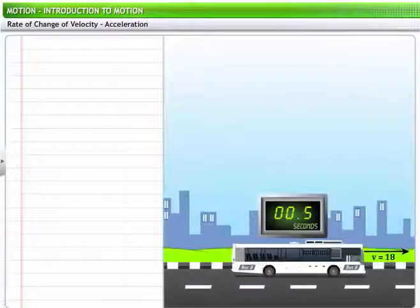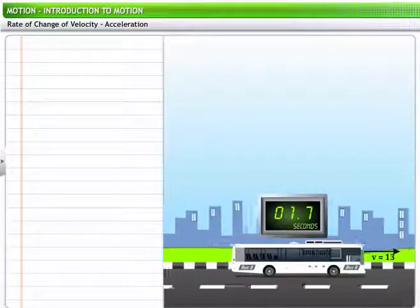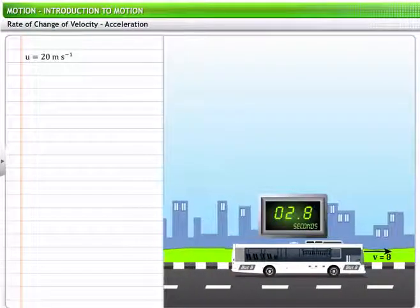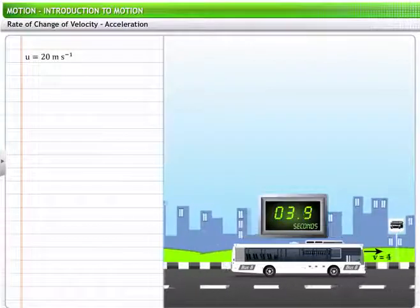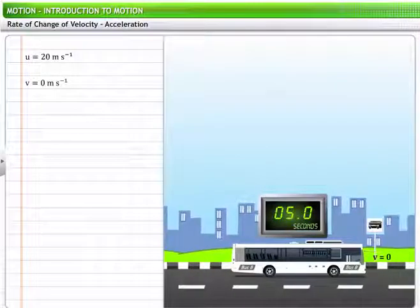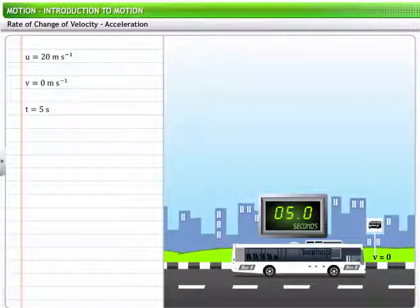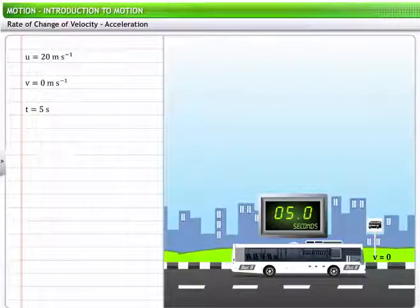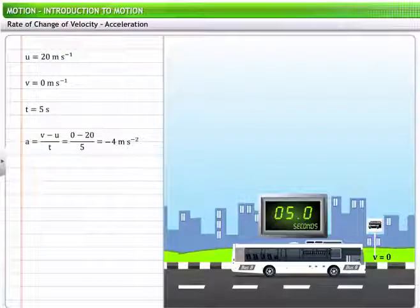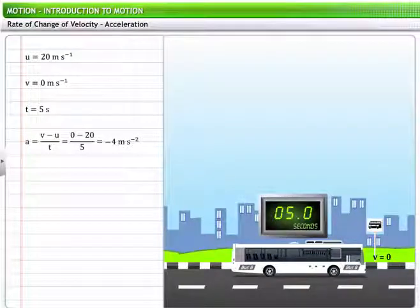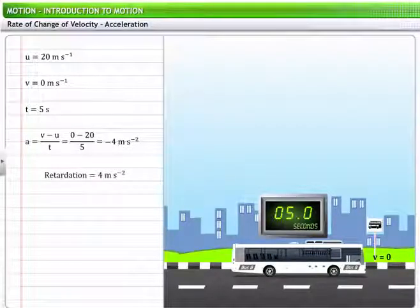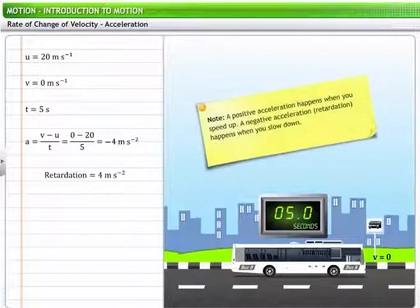For example, consider a bus travelling with a velocity of 20 m per second. The bus comes to a halt at a bus stop over 5 seconds. In this case, the acceleration of the bus is minus 4 m per second square. Thus, we say the retardation of the bus is equal to 4 m per second square.